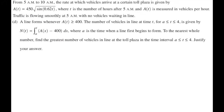For the next part, a line forms whenever A of T is greater than or equal to 400. The number of vehicles in line at time T is given by N of T, which is the integral from A to T of A of X minus 400 dx, where A is the time when the line first begins to form. To the nearest whole number, find the greatest number of vehicles in line from A to 4. This sounds like a candidate's test problem — we're looking for the absolute maximum on a closed interval.